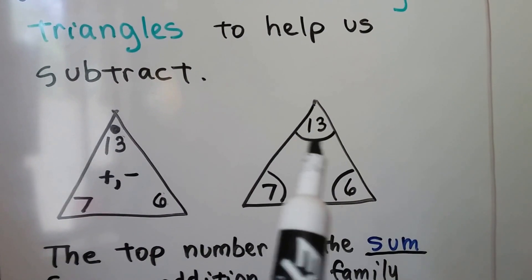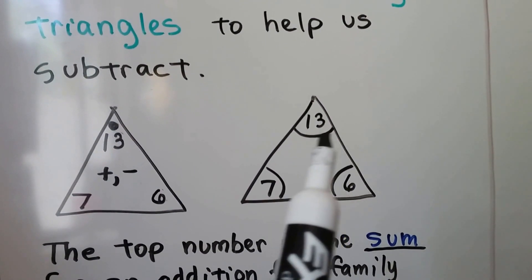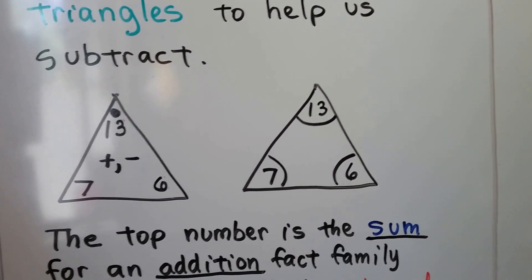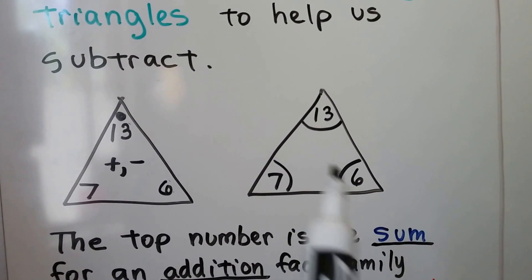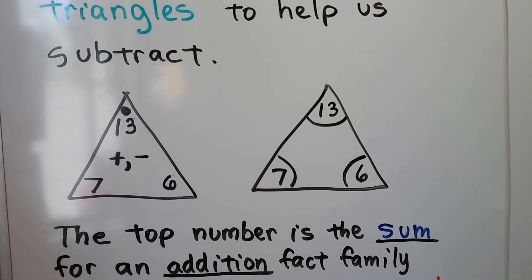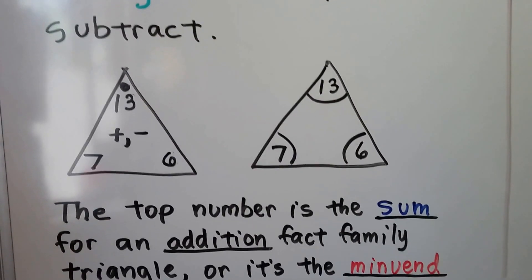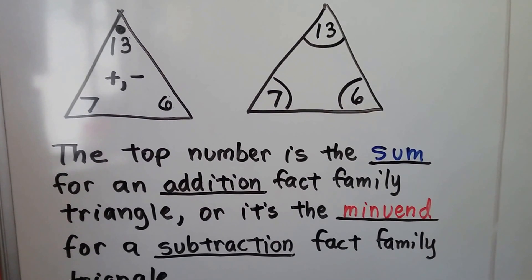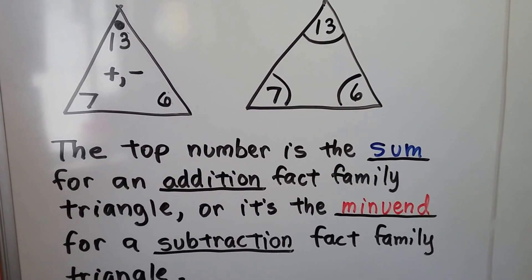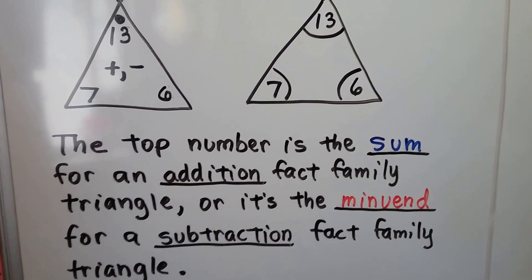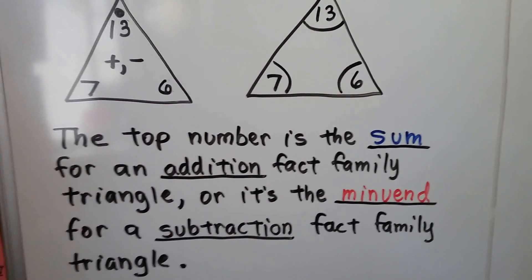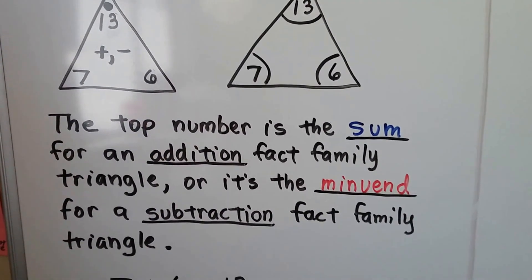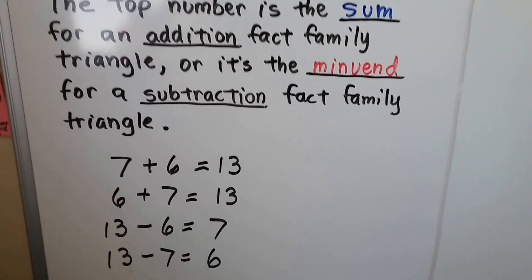Or you might see it like this, where the large number on top is the sum and there are two smaller numbers down here. You can use this for addition and subtraction too. The top number is the sum for an addition fact family triangle, or it's the minuend for a subtraction fact family triangle. We have 13, 7, and 6.